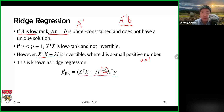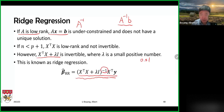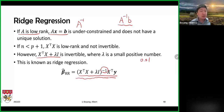We won't do the proof here, but you can find it online. We can show that as long as lambda is a positive number, this matrix will be invertible. Since lambda is a small number, it doesn't change X-transpose X too much, so you still get pretty much the same answers — but now you have a computable, invertible matrix.